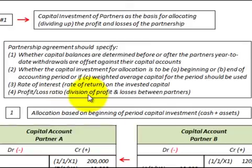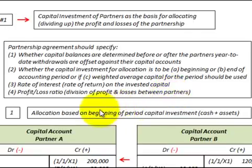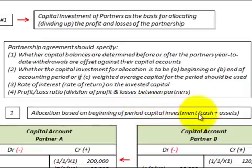The first thing we'll look at is the allocation based as of the beginning of the period for the capital investment. What we mean by capital investment is the cash and assets that the partner would have invested in the partnership.